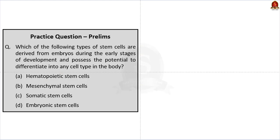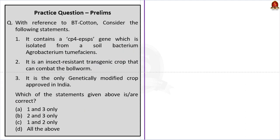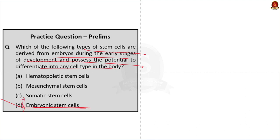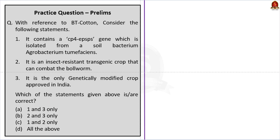Now let's look at the prelims practice questions. Question one: Which of the following types of stem cells are derived from embryos during the early stages of development and has the potential to differentiate into any cell type in the body? Options: A) Hematopoietic stem cell, B) Mesenchymal stem cell, C) Somatic stem cell, D) Embryonic stem cell. The correct answer is Option D — Embryonic stem cells, derived from embryos at the blastocyst stage.